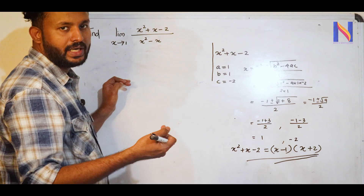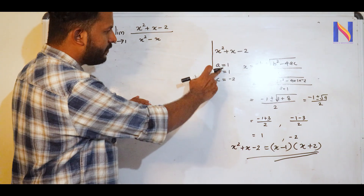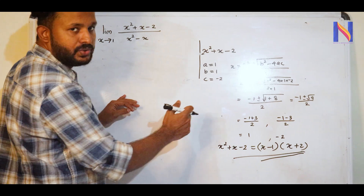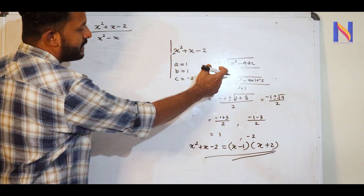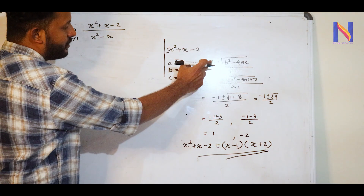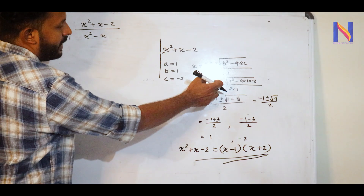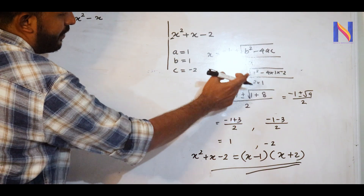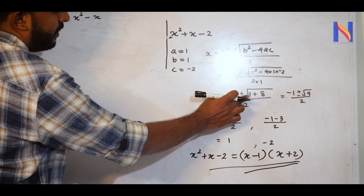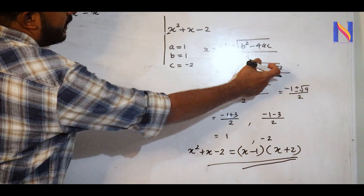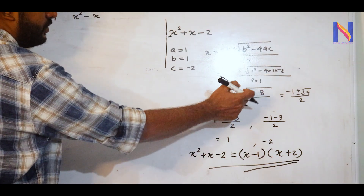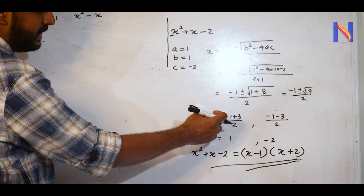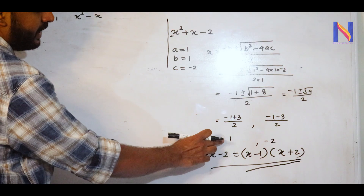We can use the quadratic formula. For x² + x − 2, coefficients are: a = 1, b = 1, c = −2. So x = (−b ± √(b² − 4ac)) / 2a = (−1 ± √(1 + 8)) / 2 = (−1 ± √9) / 2 = (−1 ± 3) / 2. This gives x = 1 or x = −2.